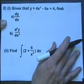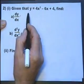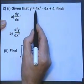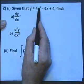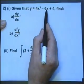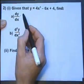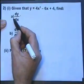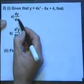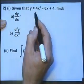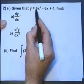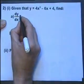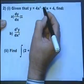Let's get started with question 2. Given that y equals 4x cubed minus 6x plus 4, find dy/dx. This is called the first differential. In other words, we are required to differentiate this equation. So let's differentiate it.